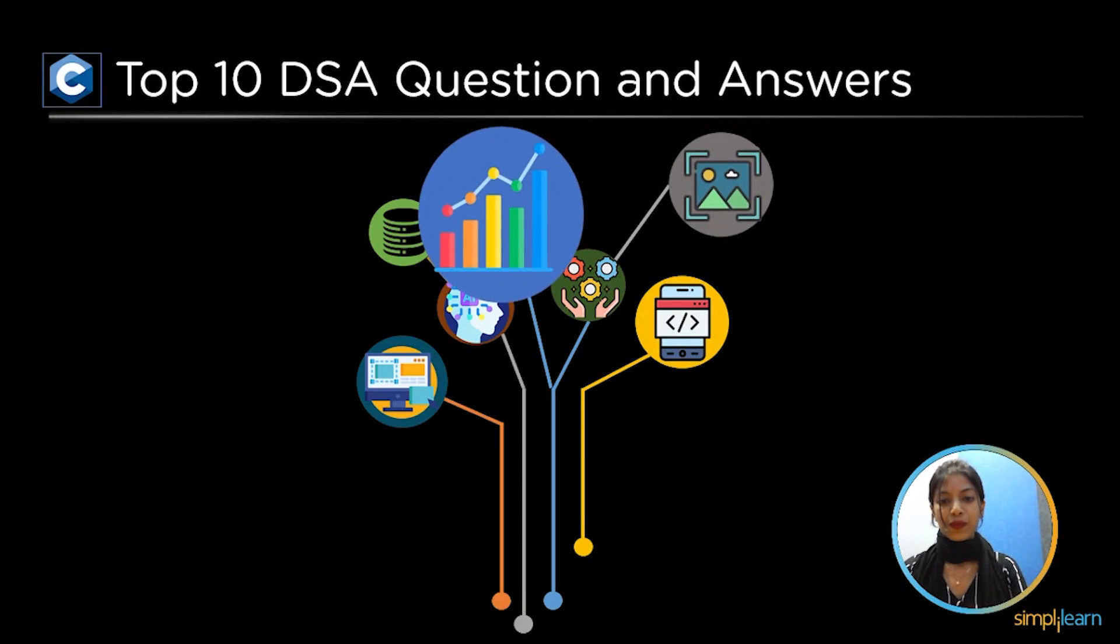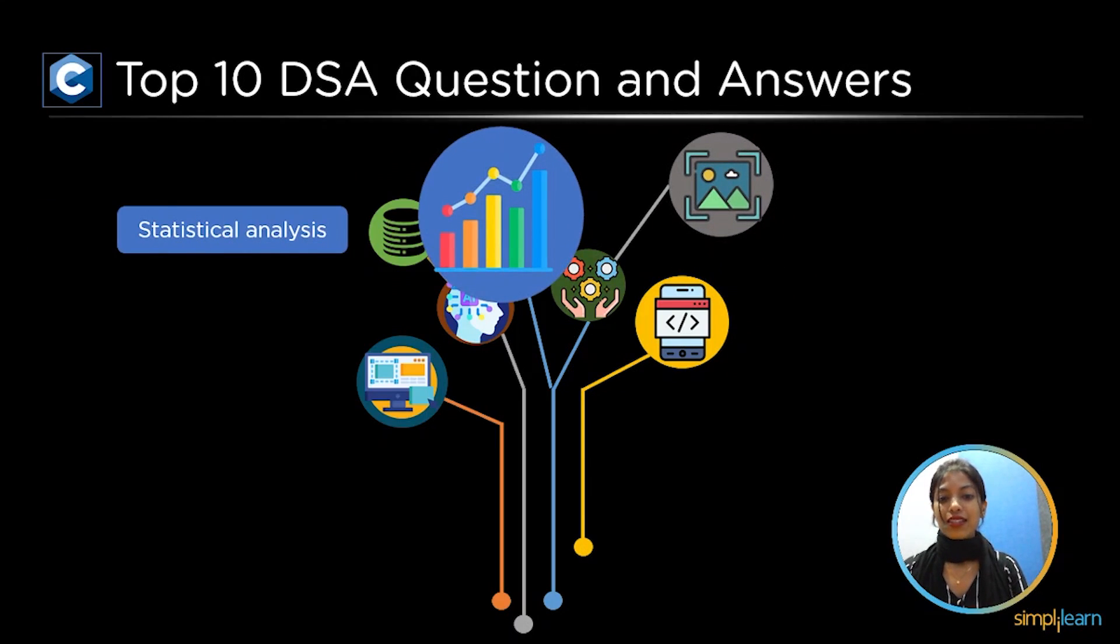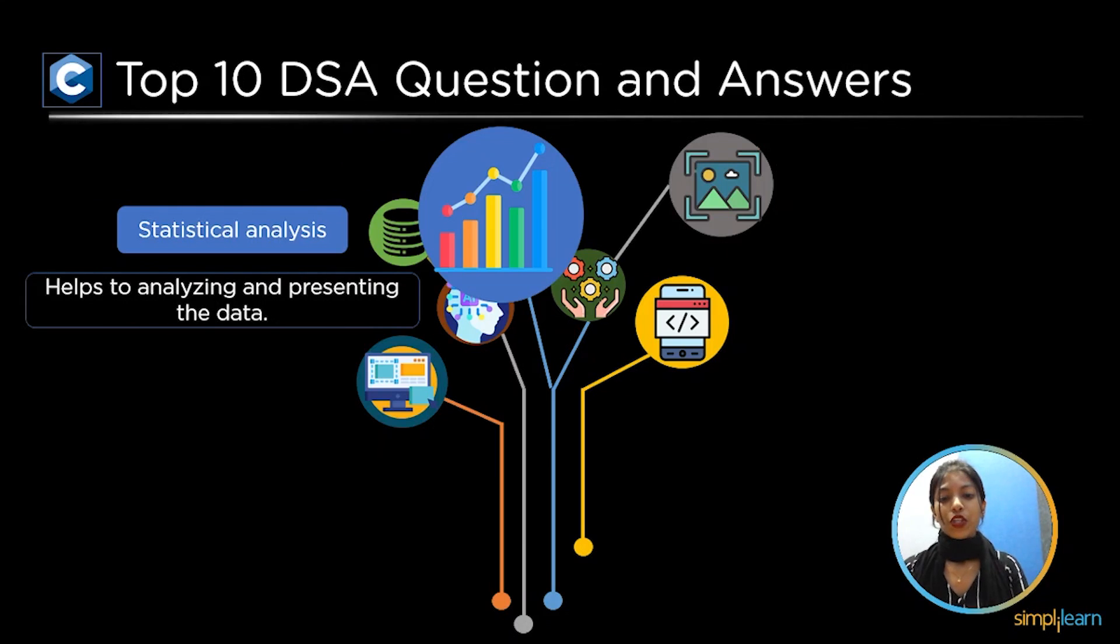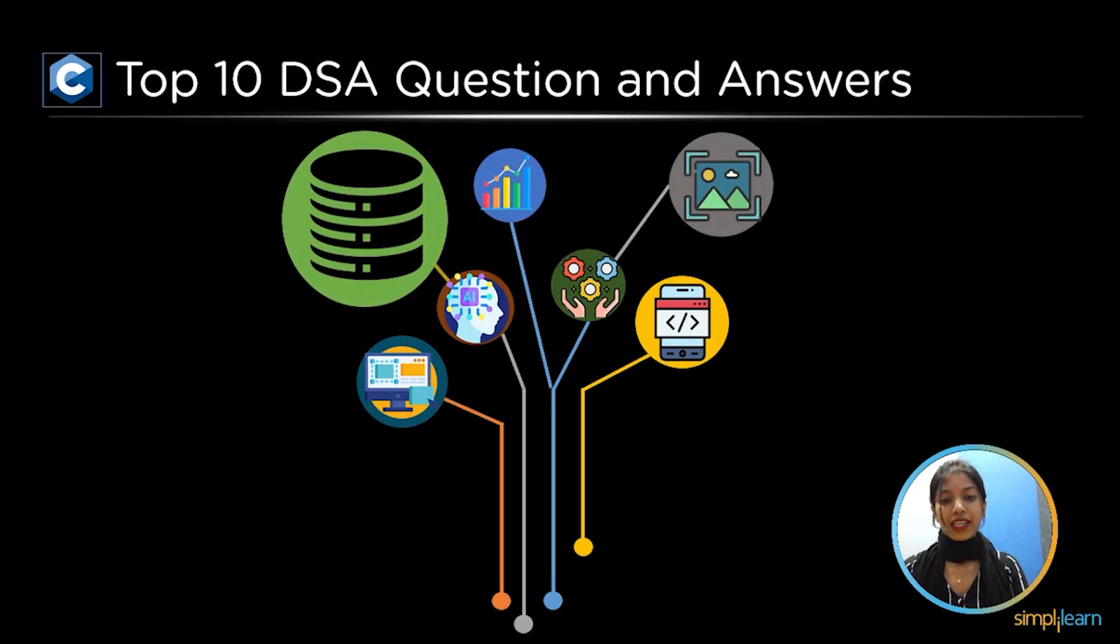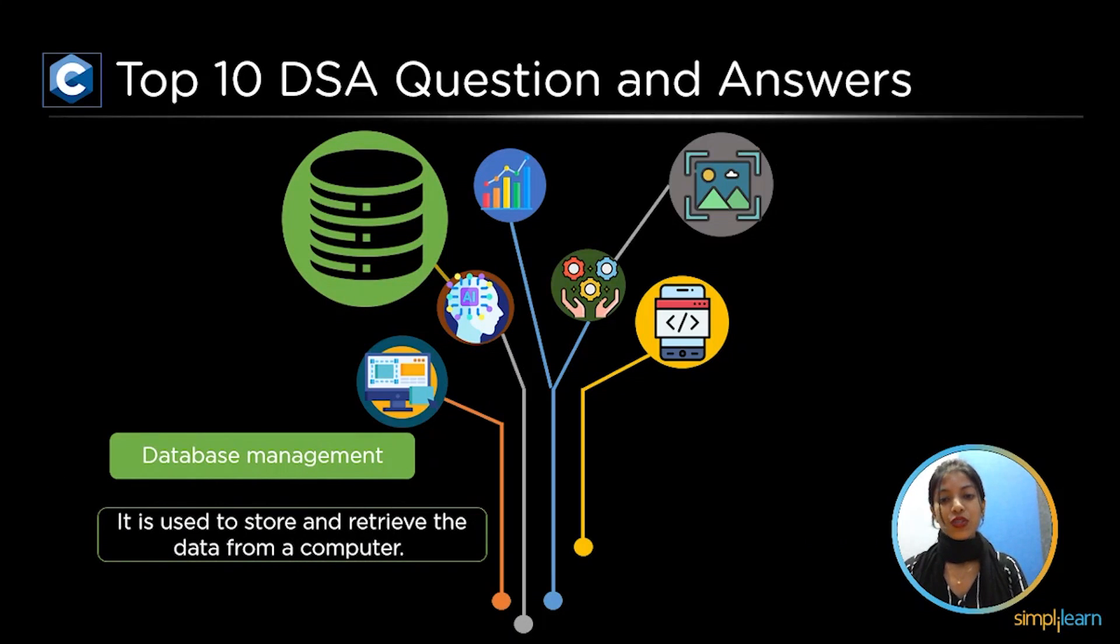Later, numerical and statistical analysis. Numerical analysis is used to refer to the numerical facts, whereas statistical analysis refers to analyzing and presenting the data. And finally, database management. It is used to store and retrieve the data from a computer.